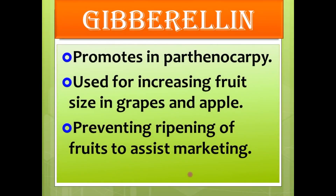The next one is gibberellin. Gibberellin promotes parthenocarpy — the development of fruit without fertilization. Such fruits don't have any seed at all. One example of parthenocarpy is banana. When we cut open a banana there is no seed, but instead there are small blackish spots inside — actually the seeds are not formed because there is no fertilization. The fruit forms without fertilization — that process is known as parthenocarpy. It also helps in seedless fruit formation.